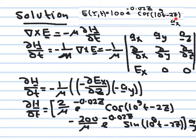The electric field is cosine(10^9 t minus 2z), but the magnetic field will be cosine(10^9 t minus 2z plus some phase φ). This phase φ can be small or large depending on the losses in the medium.